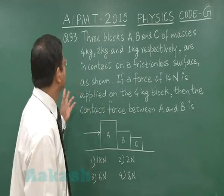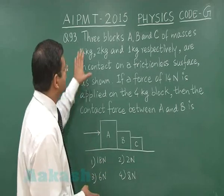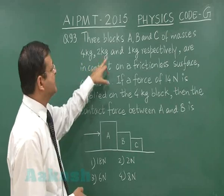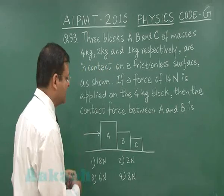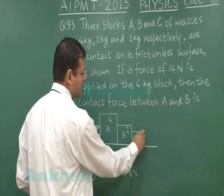Now, this question number 93 is a question of connected motion. It says that three blocks A, B and C of masses 4 kg, 2 kg and 1 kg respectively. As you can see here, A is of 4 kg, B is of 2 kg and C is of 1 kg.